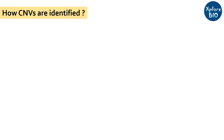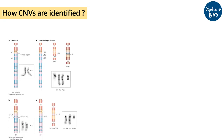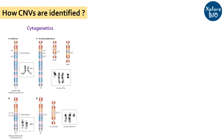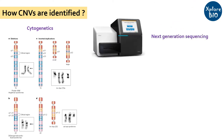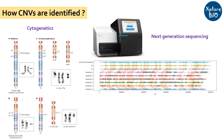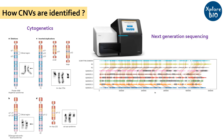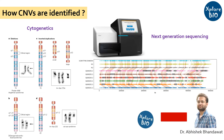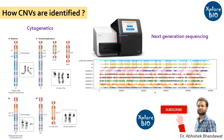Now let's see how copy number variation can be identified. Initially, copy number variations were detected using cytogenetics studies. With the advancement in next generation sequencing studies, genomes of multiple individuals can be sequenced and compared to identify segmental duplications or copy number variations.